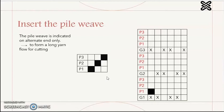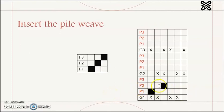We will draw alternately. Be careful, the pile weave is indicated on alternate ends only to form the long yarn fold for cutting to form the pile. So for the pile one, we put it here. For the pile two, we do not draw next to the pile one, we draw at alternate end. So we draw here, and the pile three. After you finish the pile one to pile three, we just repeat like this, then we finish the drawing.